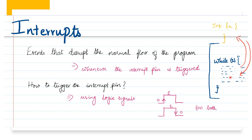Whenever code is getting executed in the while loop or in the main function, and this kind of event is detected by the interrupt pin, the program is interrupted and goes to the interrupt function. Whatever commands are written in that function are executed, and once execution is completed it returns back to the main function and continues from that point. All this happens in a very short time so the delay is not felt at all.